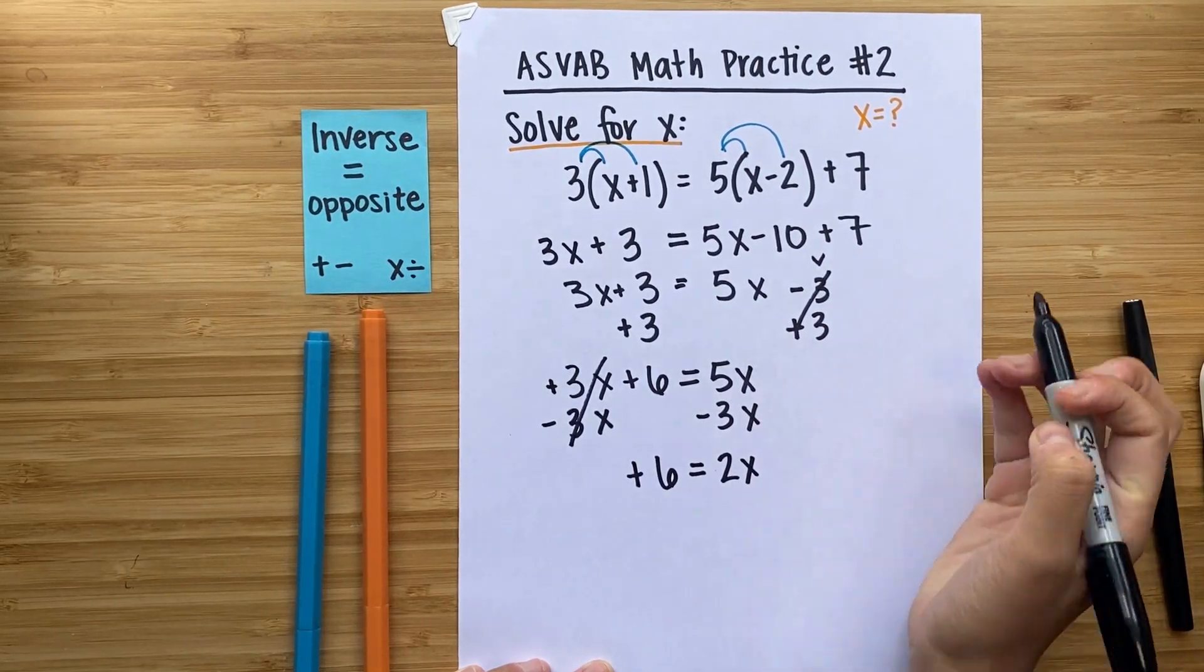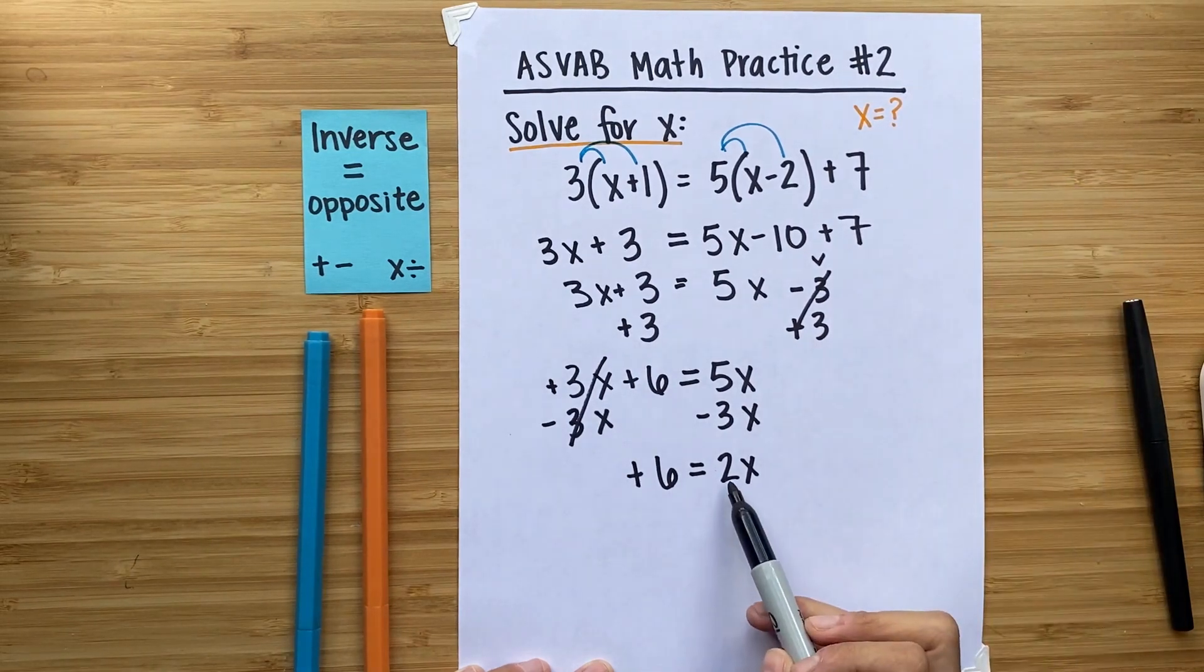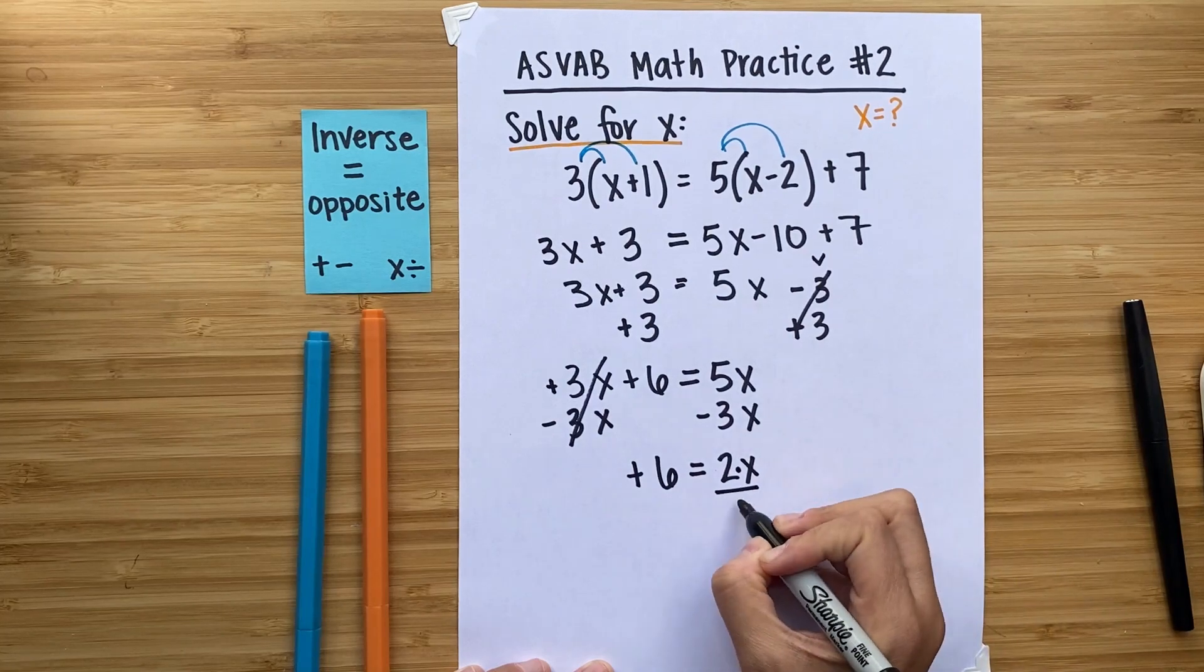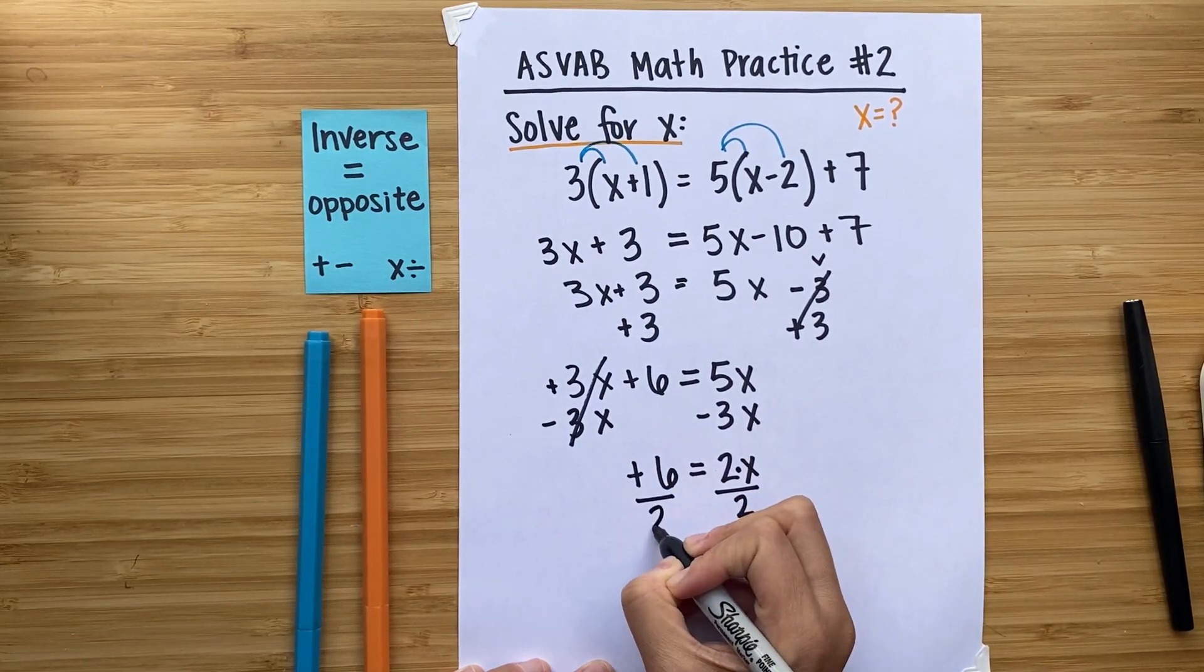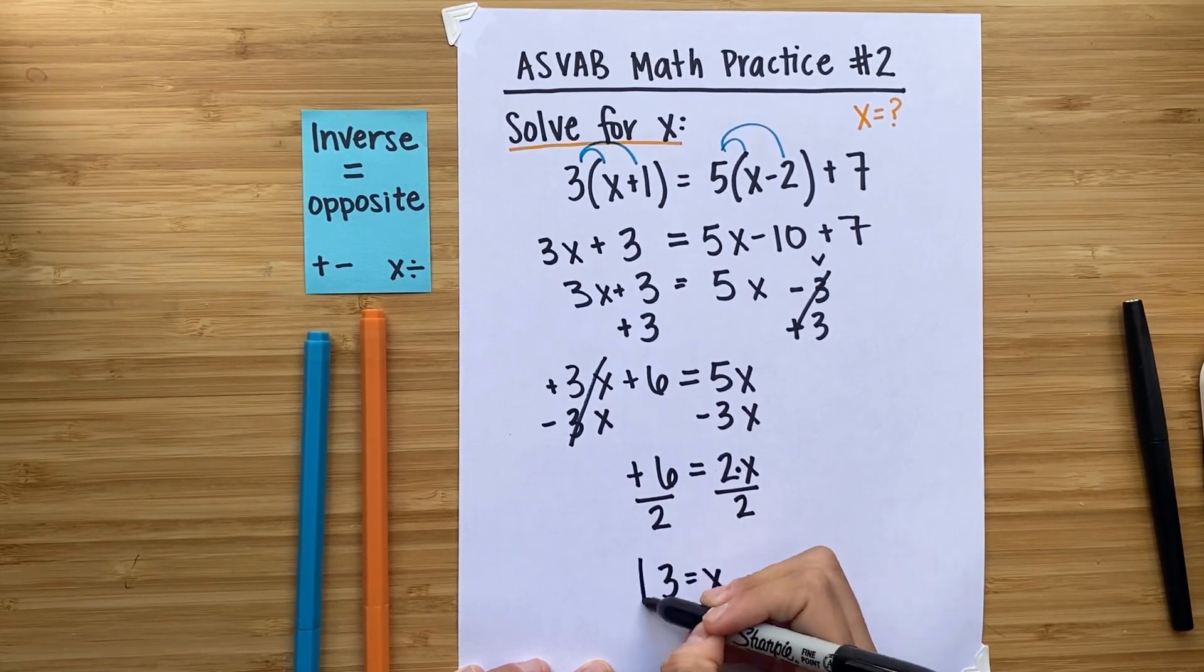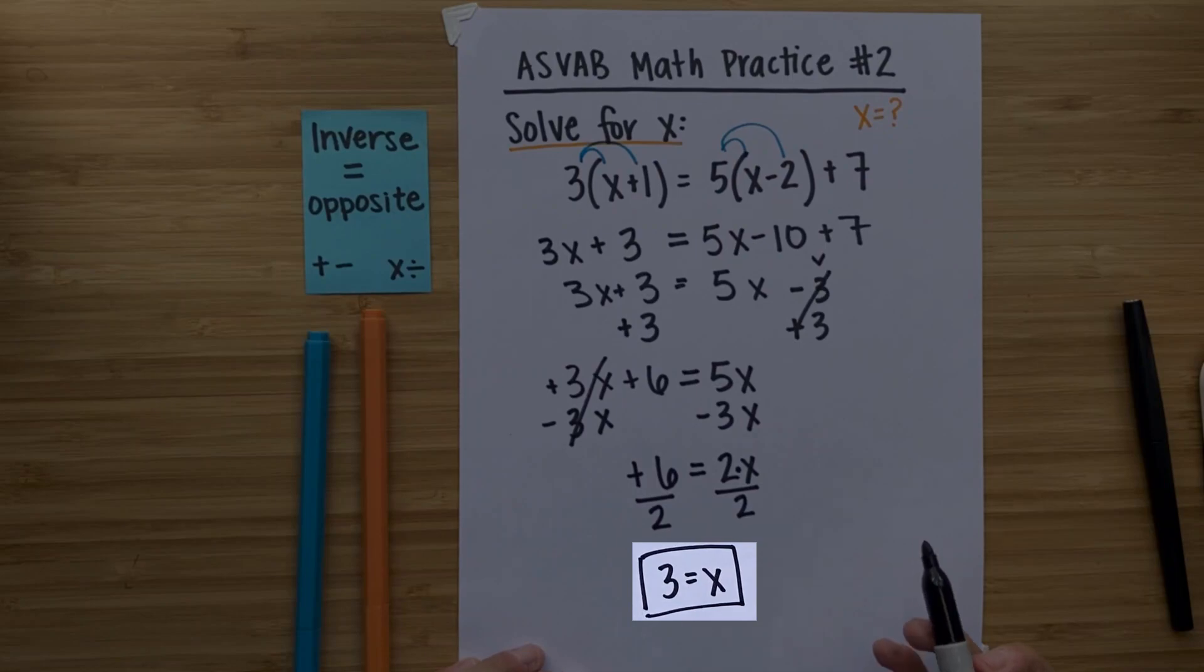I'm not all the way done. I know what 2x is equal to. So the inverse of multiplying 2 times x is dividing both sides by 2. And that gives me 3 is equal to x. So my answer is x is equal to 3.